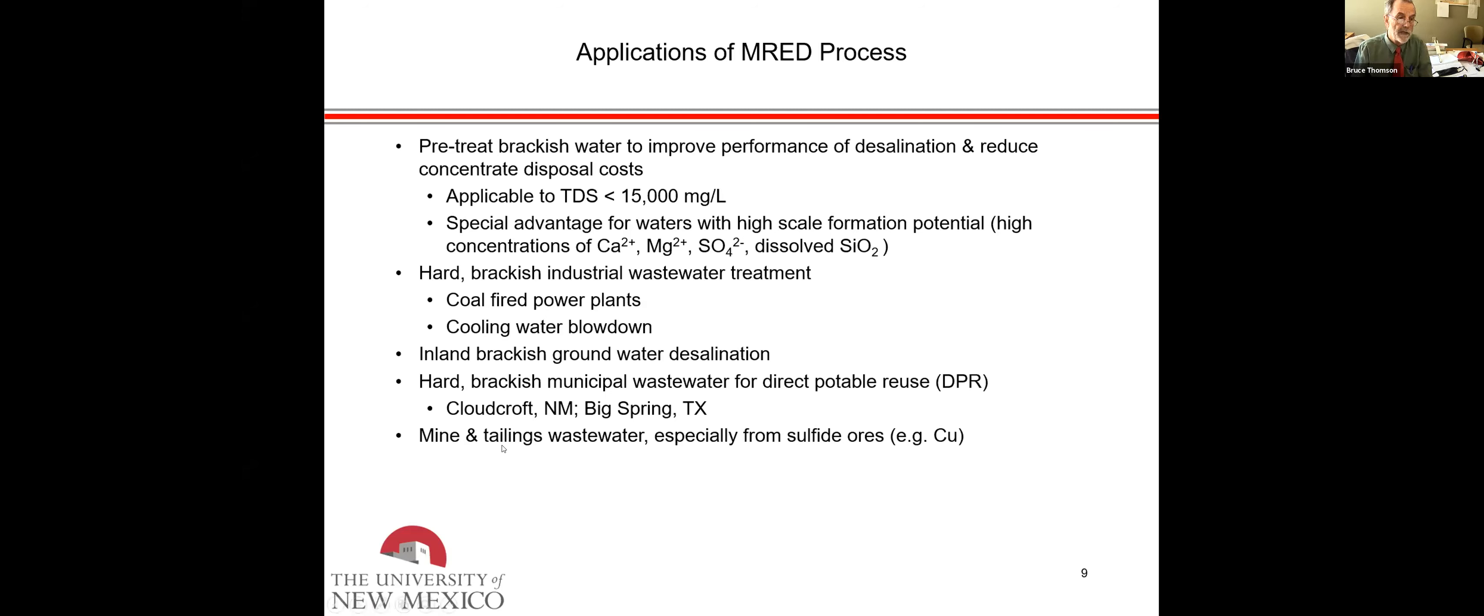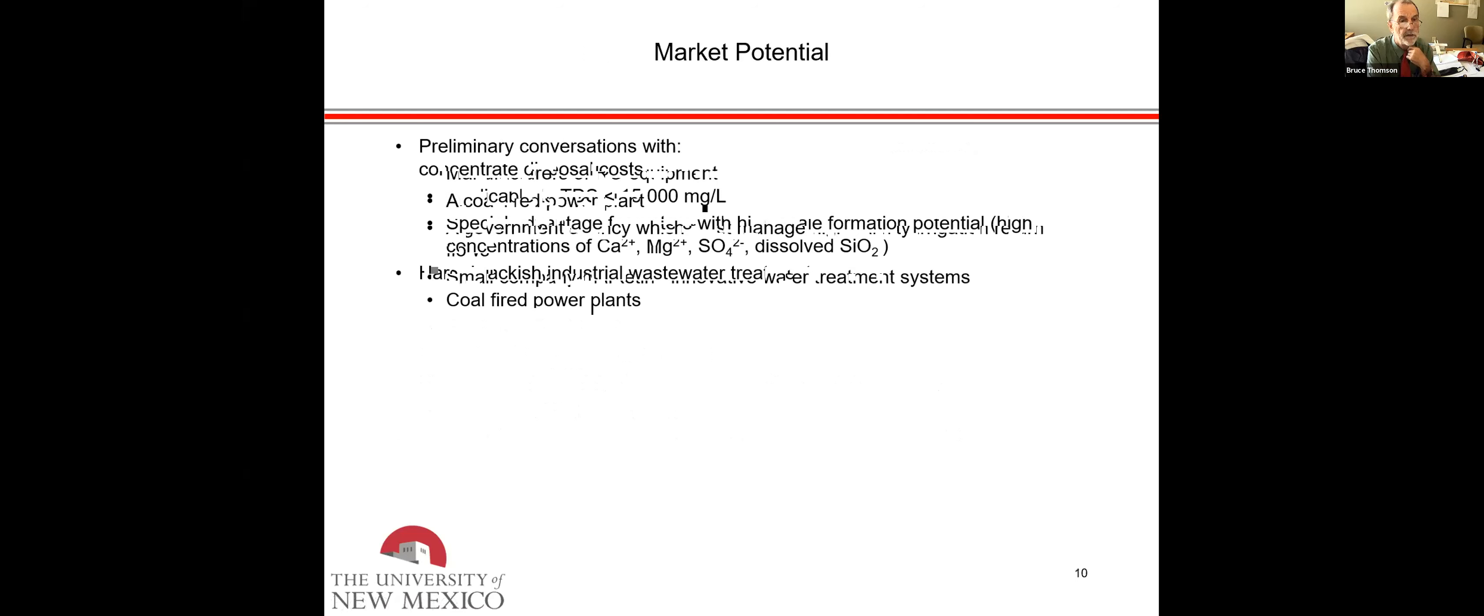Two examples: there is a plant in Cloudcroft, New Mexico, that is very close to starting up. There is an operating direct potable reuse plant in Big Spring, Texas, out in West Texas, that uses reverse osmosis. And it could be used in mine and mill tailings wastewater, such as from a copper mine or something like that.